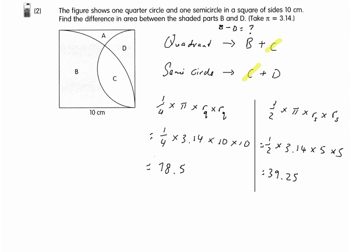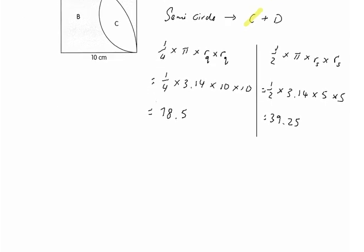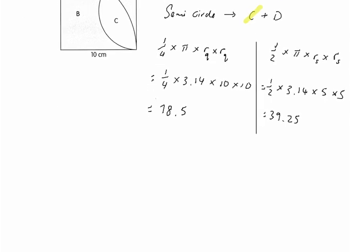Okay, in order to find the answer, we need to subtract, right? So, I use 78.5 subtract 39.25. And what do you get? 39.25. CM squared. Okay, so, 39.25 CM squared. Okay, so, you will